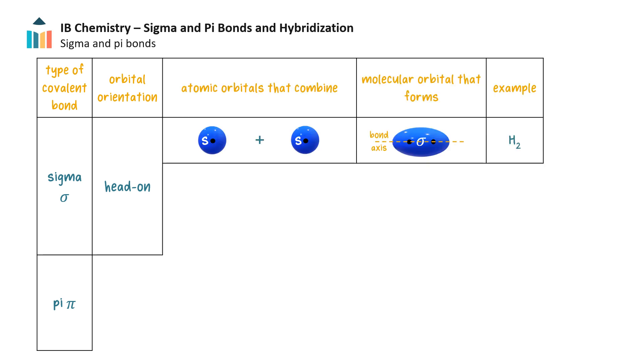Head-on overlap can occur between two s-orbitals, for example in the hydrogen molecule. The resulting orbital is called a molecular orbital.